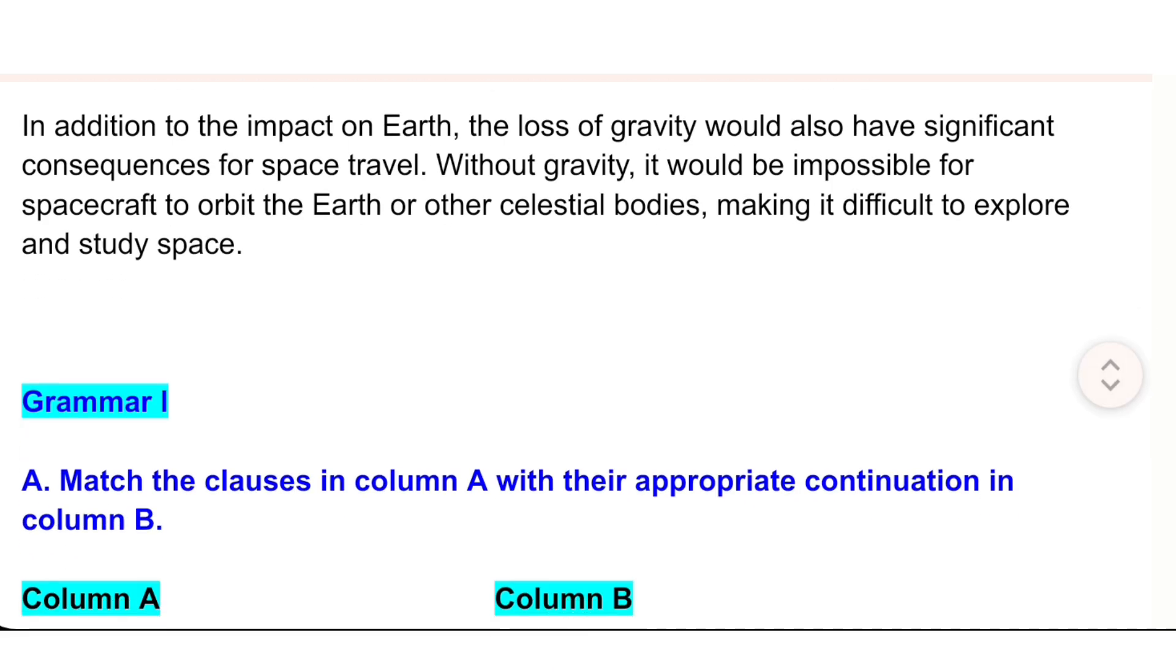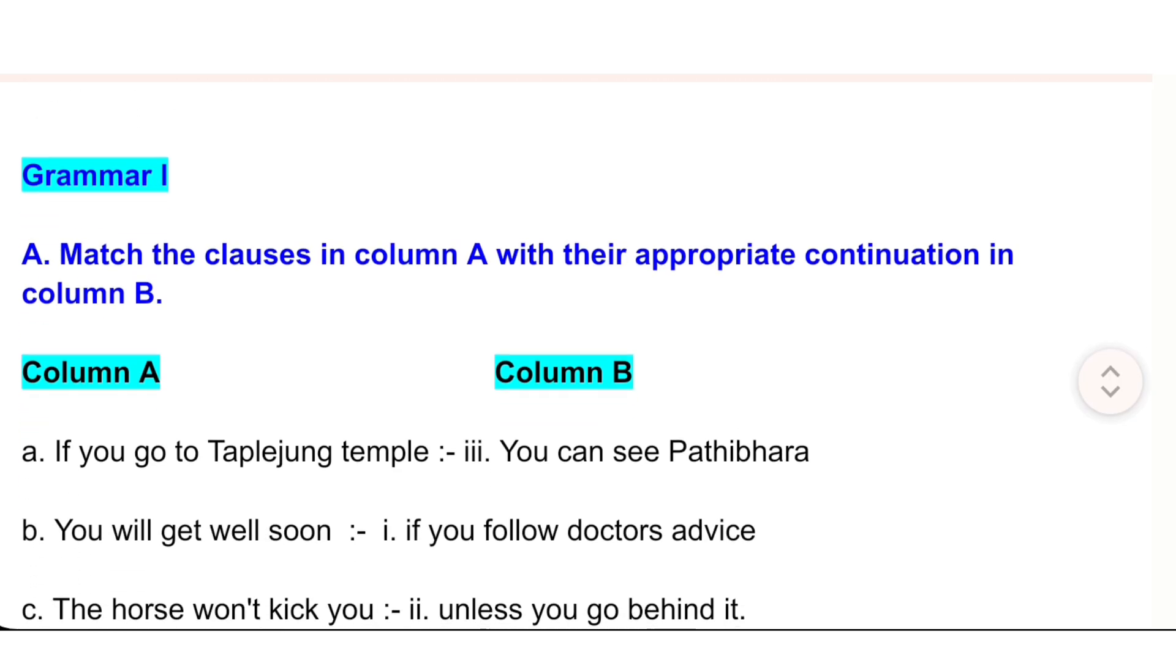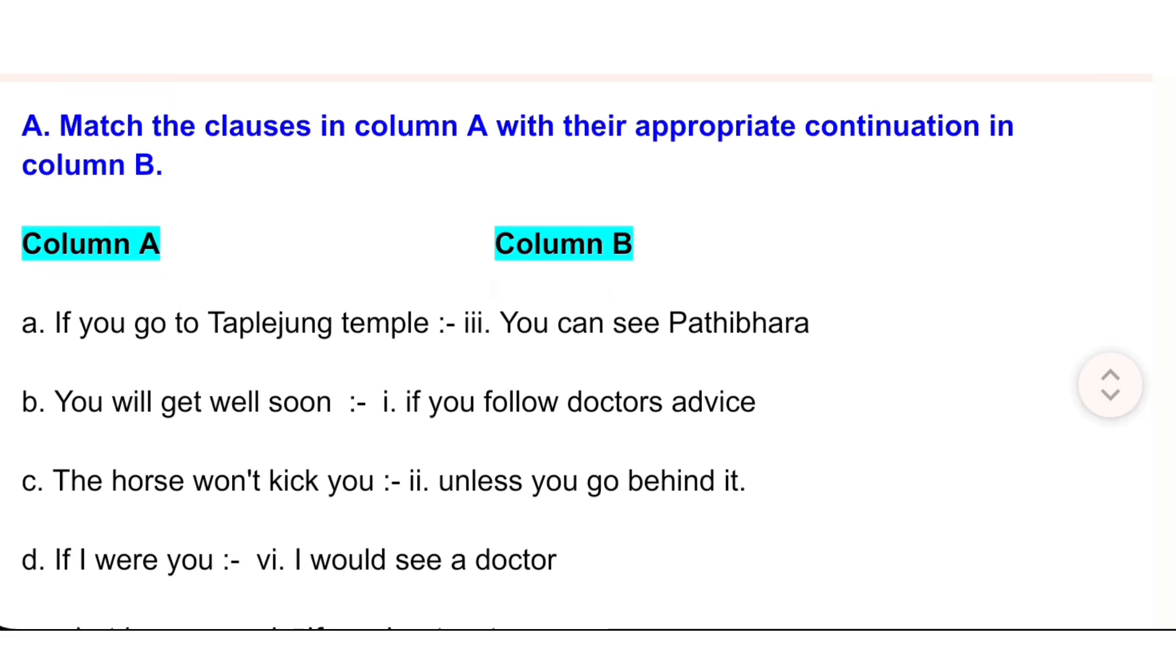Grammar 1. A. Match the clauses in column A with their appropriate continuation in column B. Column A, Column B. a) If you go to Tablejung Temple - e) You can see Pathibara.